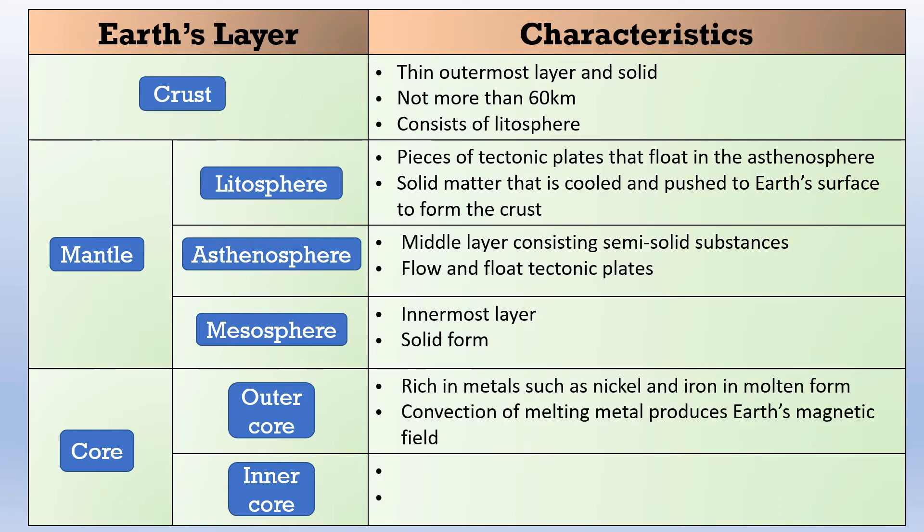Moving on to the core, the outer core is rich in metals such as nickel and iron but due to the high temperature, the nickel and iron are in molten form. The convection of the melting metal actually produces earth's magnetic field. Finally, the inner core is the same as outer core consisting of nickel and iron. However, due to the extremely high pressure, those iron and nickels are actually existing in solid form. The temperature in our inner core can reach 5000 degrees Celsius.